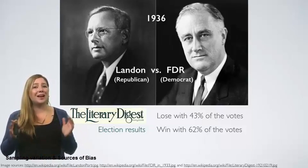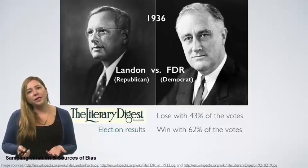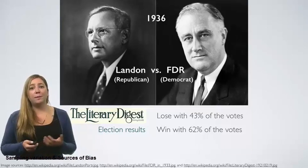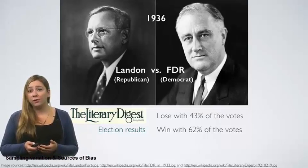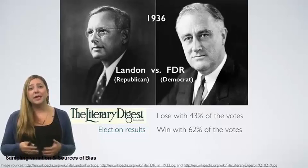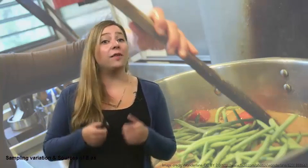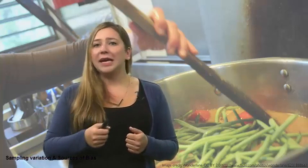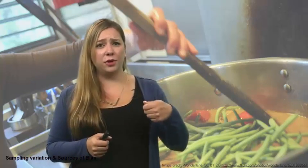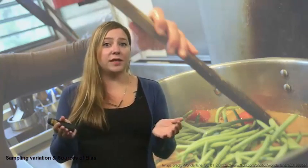In other words, the sample was not representative of the American population at the time. While the Literary Digest election poll was based on a sample size of 2.4 million — a huge sample — since the sample was biased, it did not yield an accurate prediction. Going back to the soup analogy, if the soup is not well stirred, it doesn't matter how large a spoon you have, it will still not taste right. If the soup is well stirred, a small spoon will suffice to test the soup.